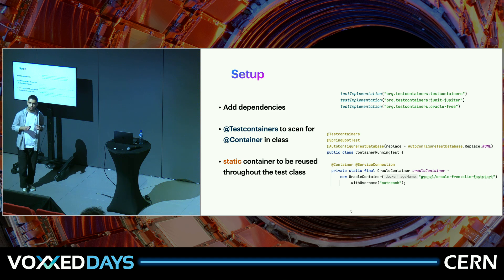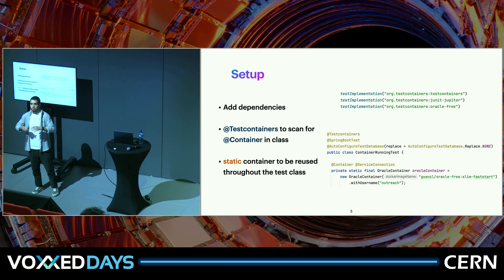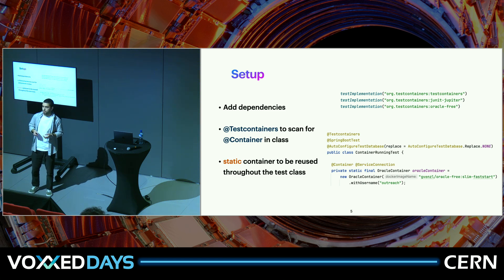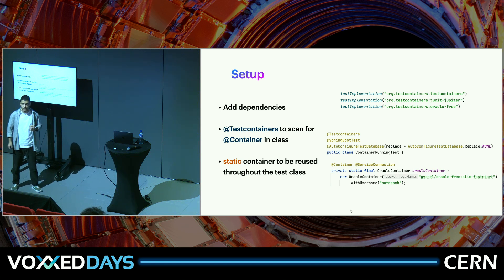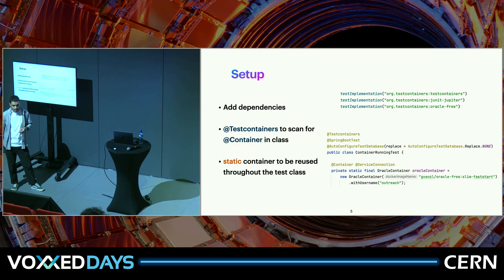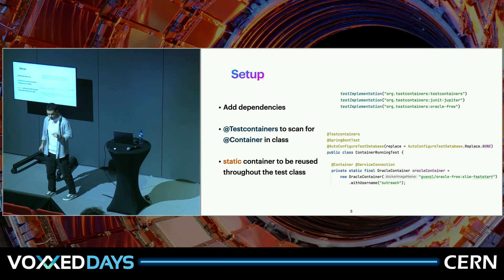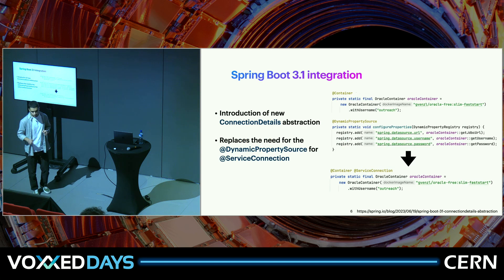From there we can start writing tests. We annotate with @SpringBootTest, @Testcontainers — which tells JUnit to scan the class, look for @Container, and manage the container lifecycle. I also added @AutoConfigureTestDatabase(replace = NONE) so Spring Boot doesn't replace the database with an in-memory one. Then I declare the container as a private static field with @Container and @ServiceConnection, using OracleContainer and passing a Docker image, overriding the username to 'outreach'.